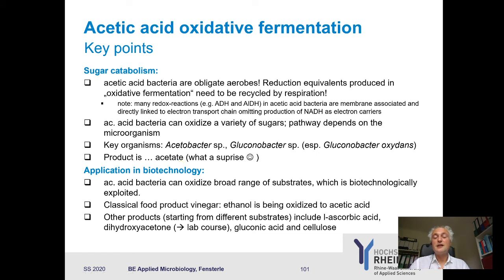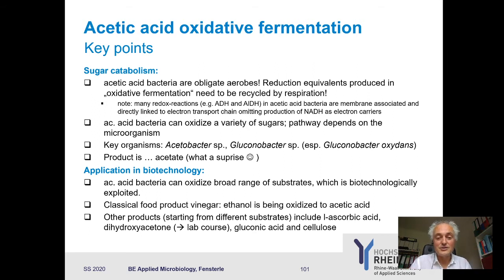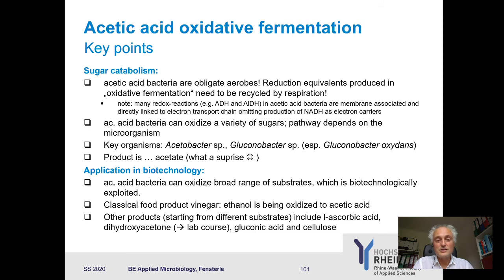You can also oxidize things other than sugar. For example, in our lab course we use glycerol as a substrate. If we oxidize glycerol at the C2 position — the hydroxyl group — we end up with dihydroxyacetone, which can be used as a tanning agent, making you look brown, though it doesn't protect you from the sun. Acetic acid bacteria can oxidize a broad range of substrates: ethanol for vinegar production, which is certainly the main product, but also producing L-ascorbic acid, dihydroxyacetone, gluconic acid, cellulose, and more. There is a variety of options with acetic acid oxidative fermentation.